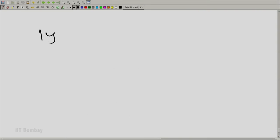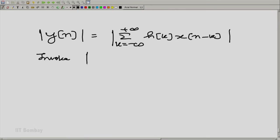Therefore, I would need to look at mod y(n), which is summation k going from minus to plus infinity, h(k) x(n-k), all with an absolute value taken. But here we invoke the principle: mod of A plus B in general is less than or equal to mod A plus mod B.